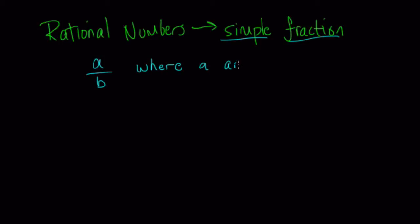So rational numbers are numbers that can be written as a simple fraction. A simple fraction is in the form of a/b, where a and b are both integers, or positive or negative whole numbers.